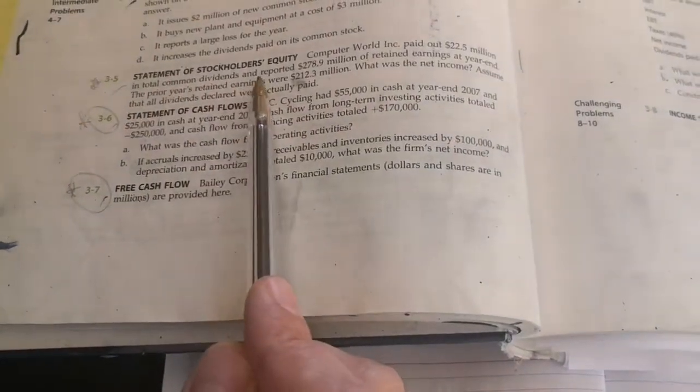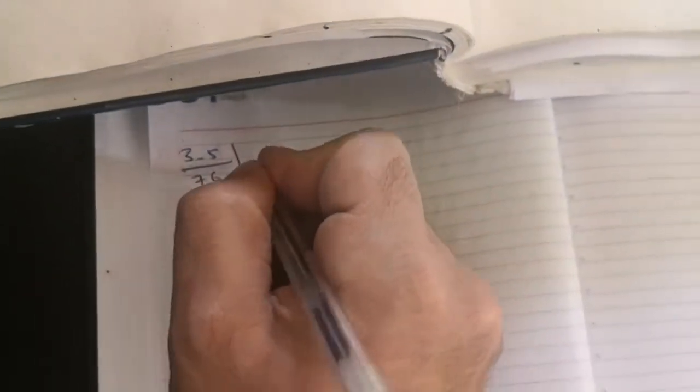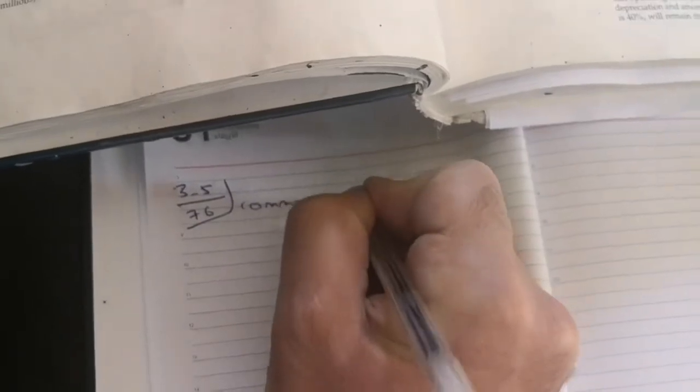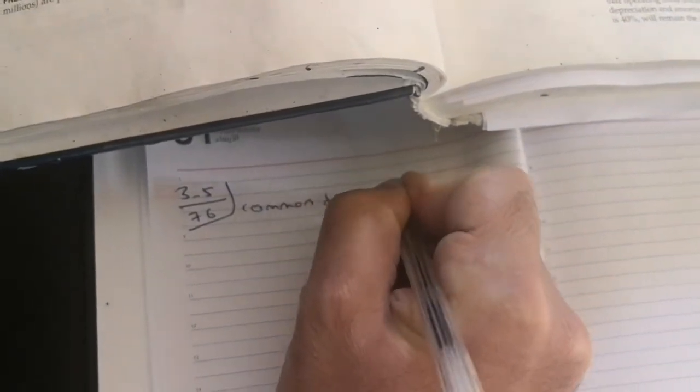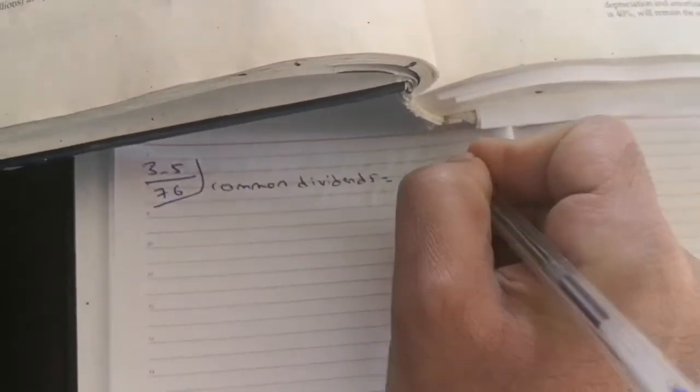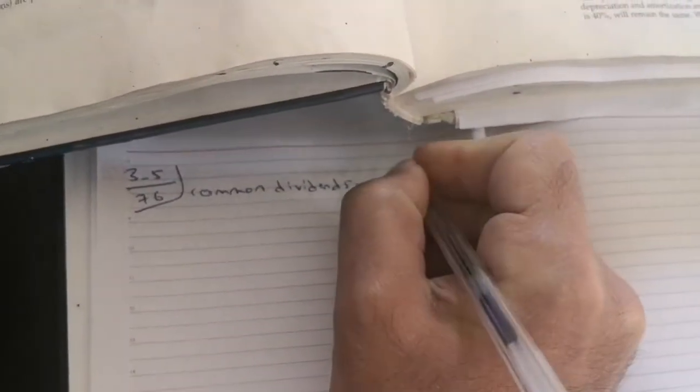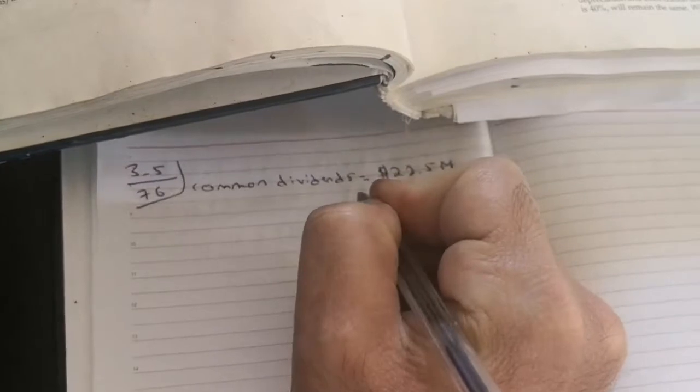So write here: common dividends equal $22.5 million.